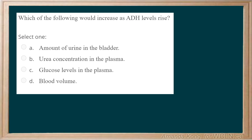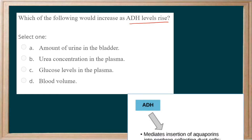Which of the following would increase as ADH levels rise? A. Amount of urine in the bladder. B. Urine concentration in the plasma. C. Glucose levels in the plasma. Or D. Blood volume.